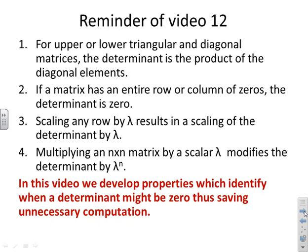As a reminder of what we covered in video 12: for upper or lower triangular matrices, the determinant is the product of the diagonal entries. If a matrix has an entire row or column of zeros, the determinant is zero. And if we scale any row or column by lambda, the determinant is scaled by lambda; if we scale every element by lambda, the determinant is scaled by lambda to the n.